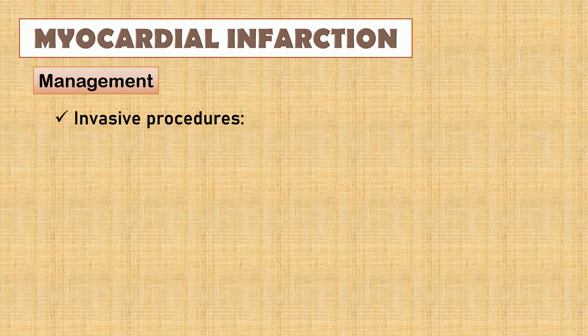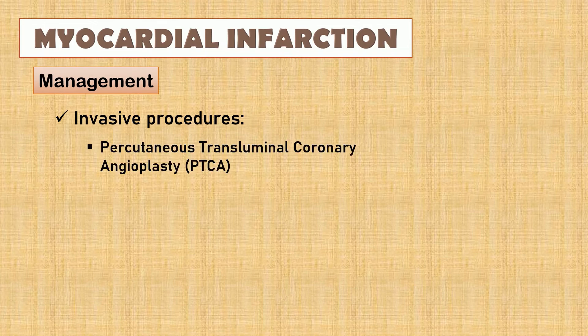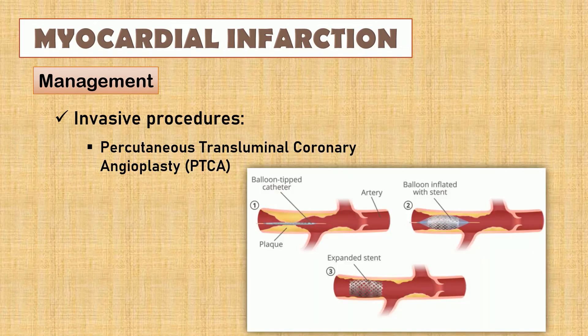We also have some invasive procedures. The goal is to minimize myocardial damage, preserve myocardial function, and prevent complications. First is percutaneous transluminal coronary angioplasty — this is done to restore blood flow to the coronary arteries. It involves insertion of a long, thin tube or catheter in the blocked artery. Once it reaches the blocked artery, they will inflate a small balloon to reopen the artery. This allows blood to flow again, and the surgeon may also put a stent to prevent the artery from closing again.